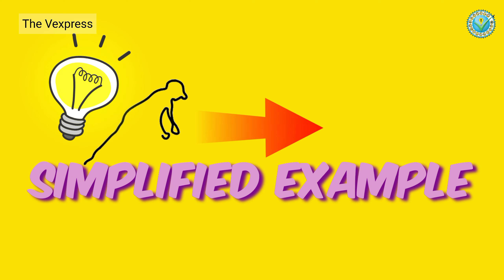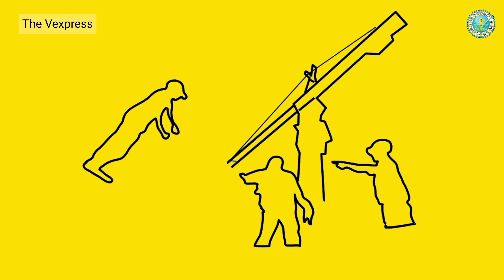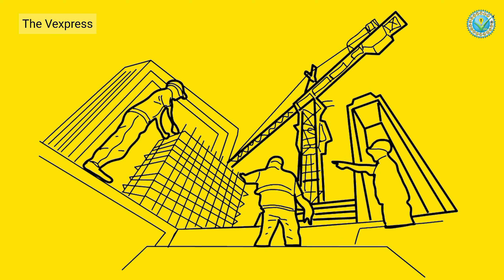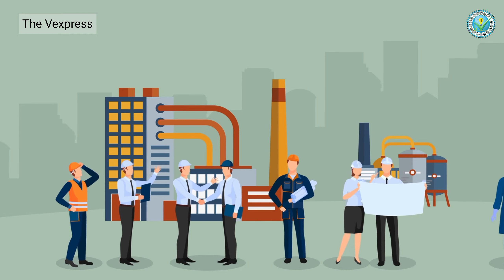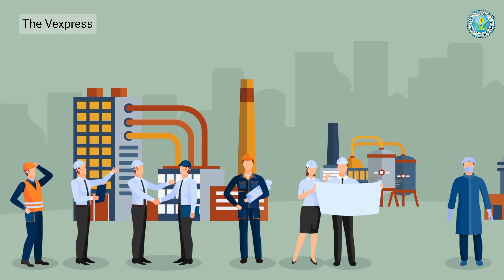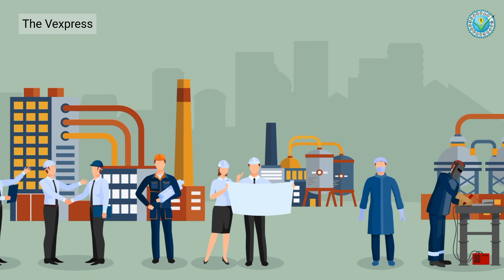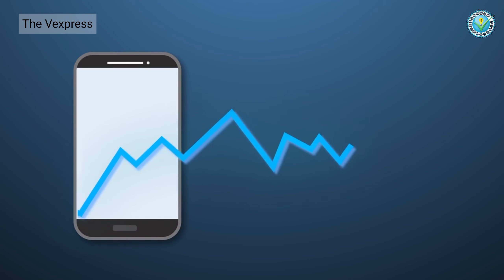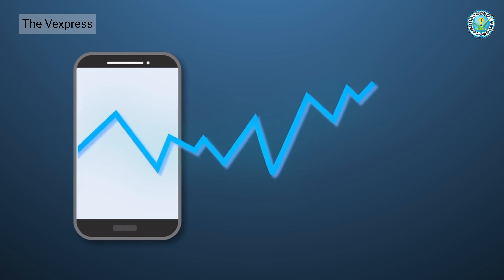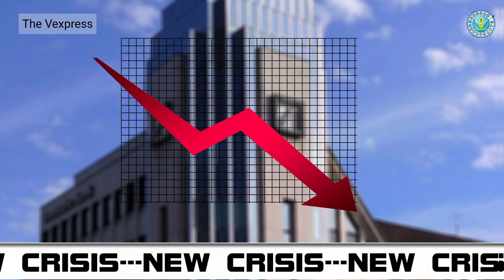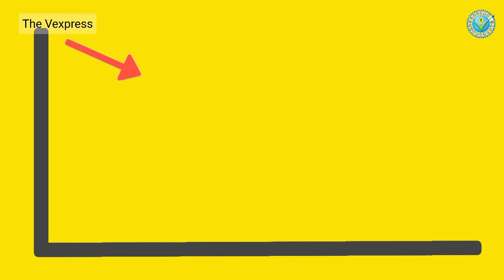Simplified example: suppose the Indian government announces a series of economic reforms that boost infrastructure development. As a result, construction companies report higher profits. Investors feeling optimistic about future growth start buying shares of these companies, driving up stock prices. Conversely, if a major global event like a financial crisis occurs, investors may become fearful and sell their shares, leading to a drop in stock prices.